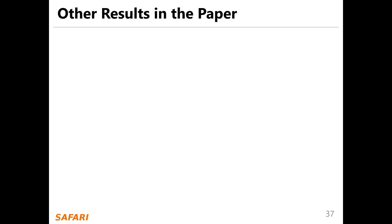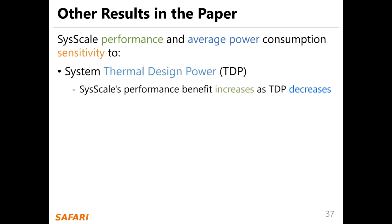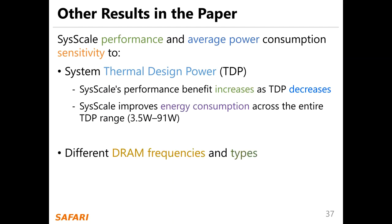We have more results in the paper. For example, C-Scale performance and average power consumption sensitivity to system TDP. C-Scale's performance benefit increases as TDP decreases, and C-Scale improves energy consumption across the entire TDP range. We also have results for different DRAM frequencies and types.